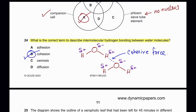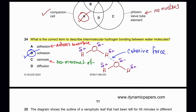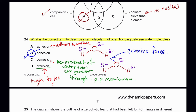The other options are not correct: adhesion is when water adheres to a surface; osmosis is the net movement of water down a water potential gradient through a partially permeable membrane; and diffusion is the movement of substances from high to low concentration.